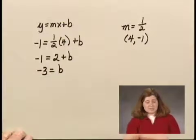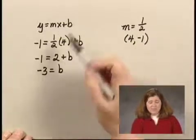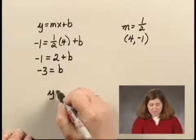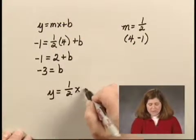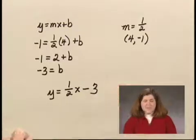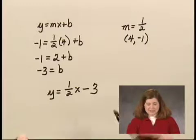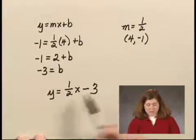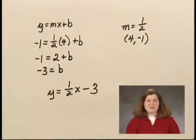Now I can substitute 1/2 for m and -3 for b to get the equation of the line: y equals 1/2 x minus 3. Since this is the same equation I got using the other method, I have a good check, and I can state that an equation of the line we're looking for is y equals 1/2 x minus 3.